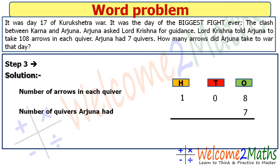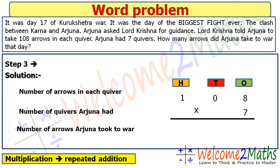How many arrows did Arjuna take to war that day? This is what we have to find out. The statement is: number of arrows Arjuna took to war. We have two pieces of data — Arjuna had 7 quivers and each quiver has 108 arrows. We need to add 108 seven times, but that takes more time. So we multiply, because multiplication is nothing but repeated addition.